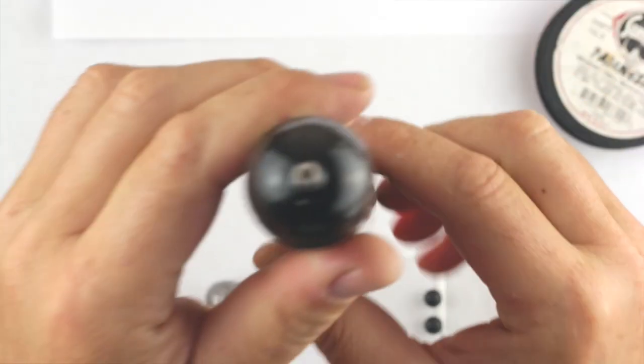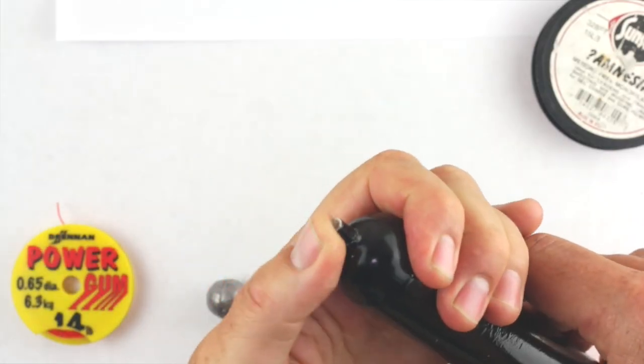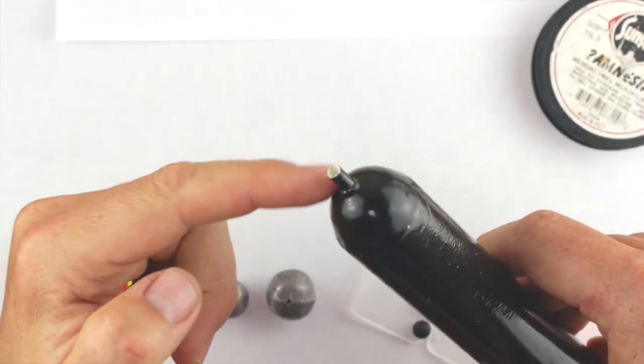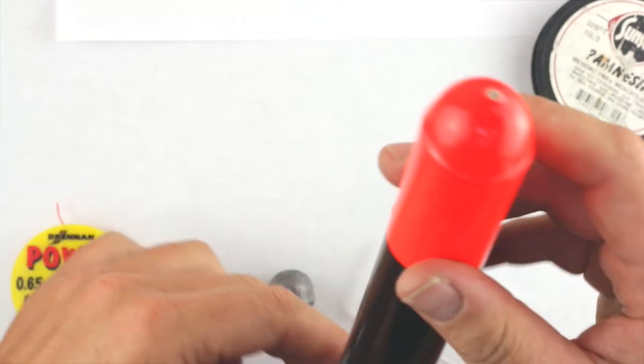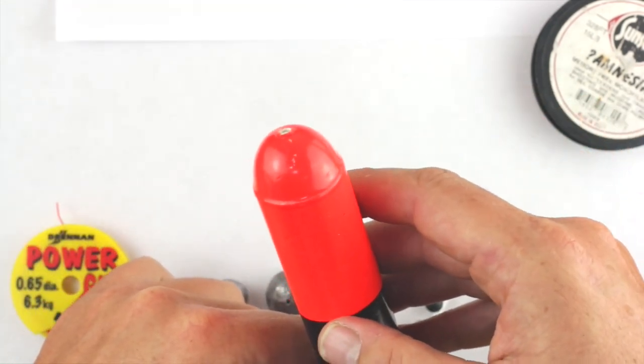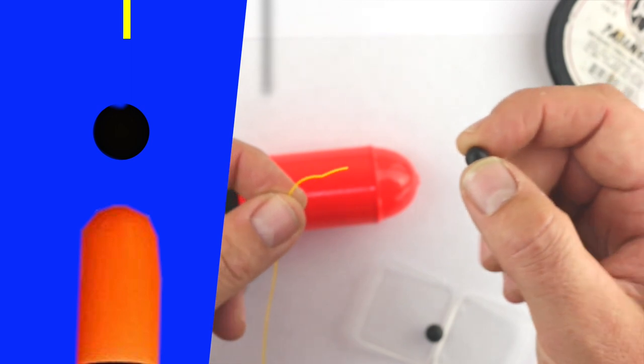Top of the float there, this is quite a cheap float, and you've got these little end bits, I tend to cut those off, and just check that there's nothing there for the line to snag on, because that will be running through the middle of the float.